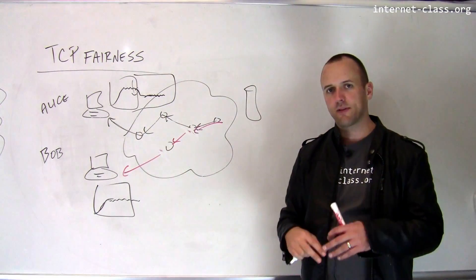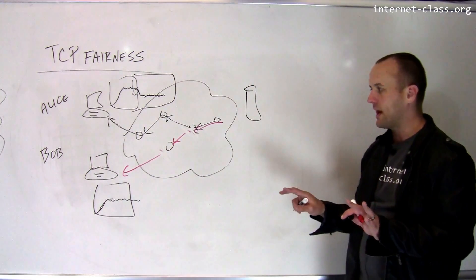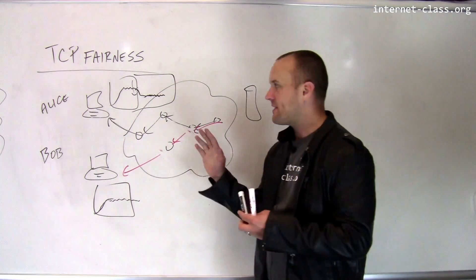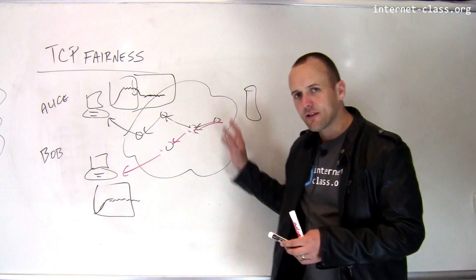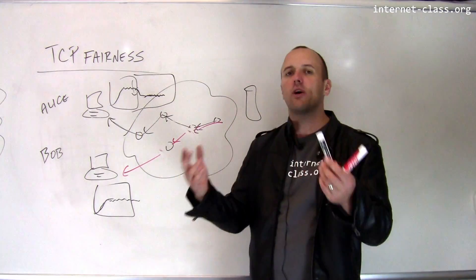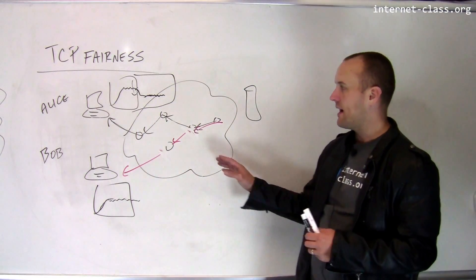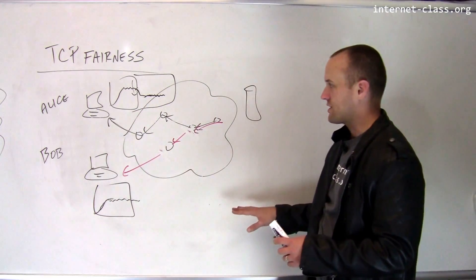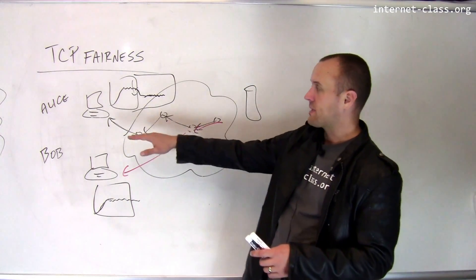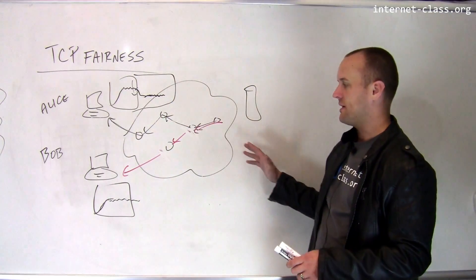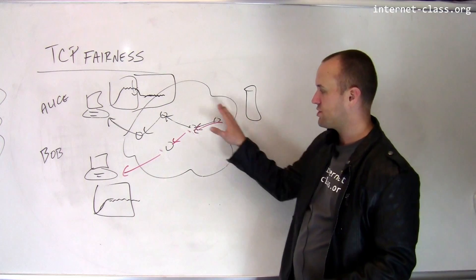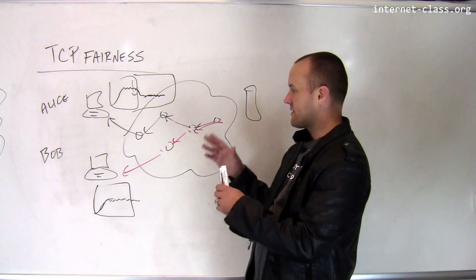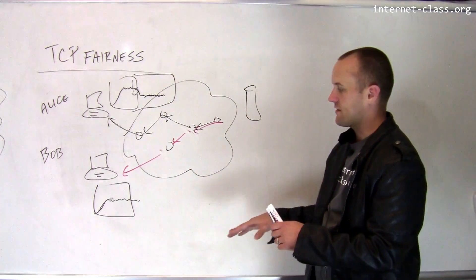And what's happened here is without any explicit coordination between Alice and Bob and between Alice and Bob's computers, TCP has divided the resources within the network in some somewhat fair way. So rather than allowing Alice to have all the bandwidth and kill off Bob's connection or rather than letting Bob's new connection completely starve Alice's connection, TCP allows both connections to share the network and it does so by increasing speed until it sees packet loss and then allowing other clients to slow down.